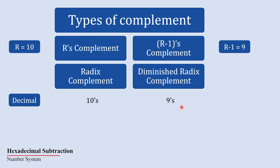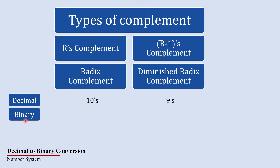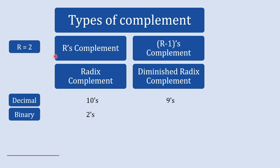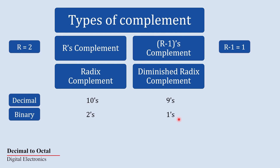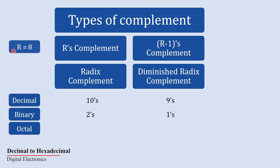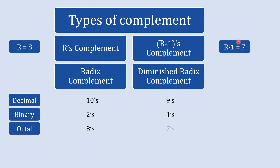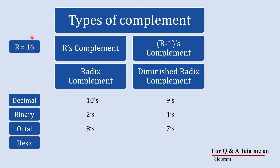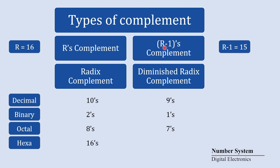For the binary number system, the radix is 2, so r's complement is the 2's complement and r-1's complement is the 1's complement. For octal, the radix is 8, giving us 8's complement and 7's complement. For hexadecimal, the radix is 16, giving 16's complement and r-1 is 15 — which in hexadecimal is F — so we call it F's complement.